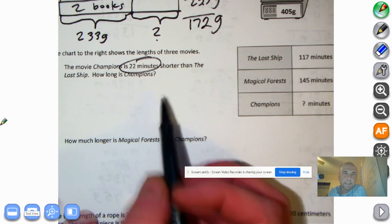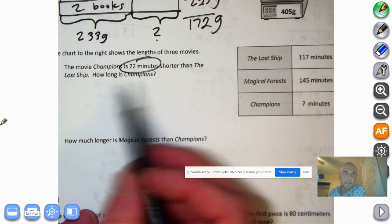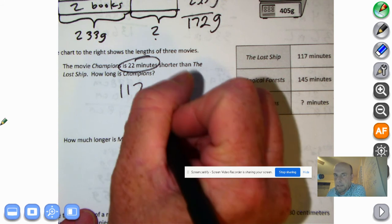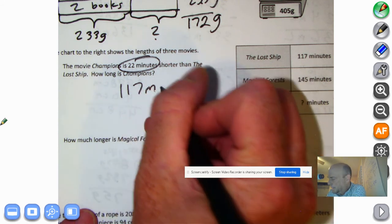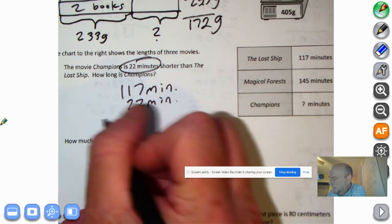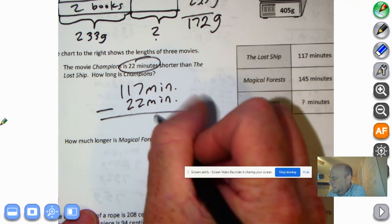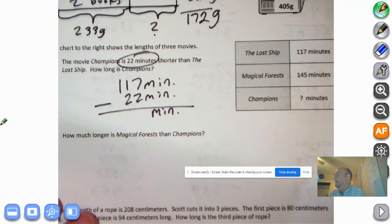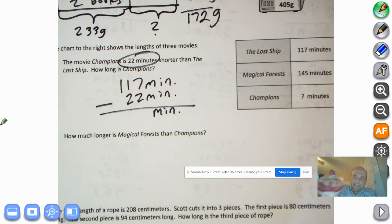Well, that could be Princess Yvonne, but let's get back to math. And Champions is 22 minutes shorter than The Lost Ship. The Lost Ship is 117 minutes. So we're going to subtract 22 minutes from 117 minutes. Bring down the minutes. And let's start subtracting. Actually, why don't you go ahead and pause the recording so you can try to figure it out yourself.